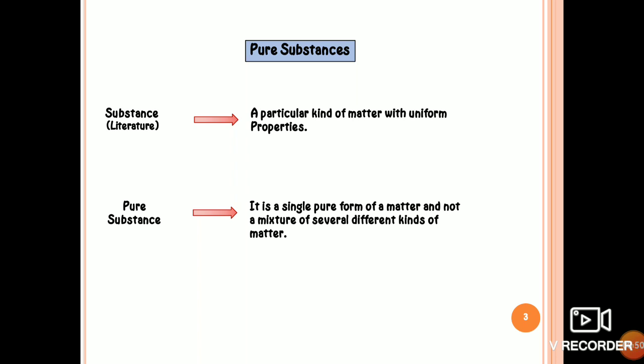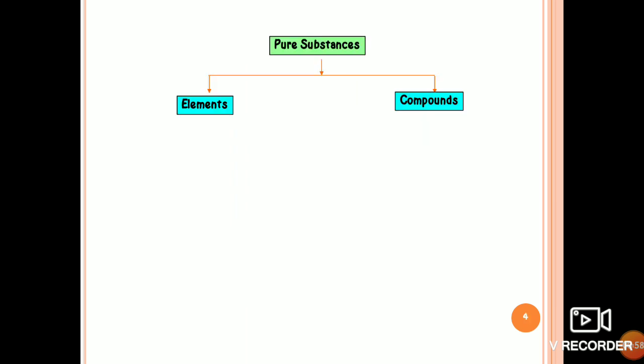We cannot separate pure substances easily by physical means. Pure substances are those which are homogeneous, that means of the same kind, and which are constituted of only one kind of particles.